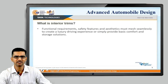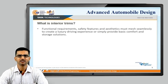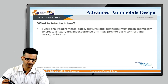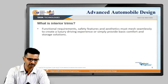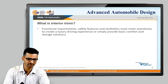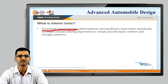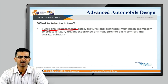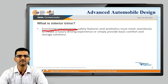What is interior trim? There are various requirements. The first one is functional requirement — there have to be some functions. For example, there are many controls inside the passenger compartment: window opening and closing buttons, sound systems, various buttons, AC knobs and everything. So there are many functional requirements, and all of these must be seamlessly integrated inside the trim.